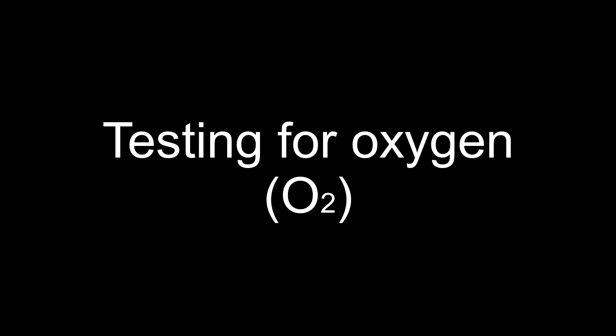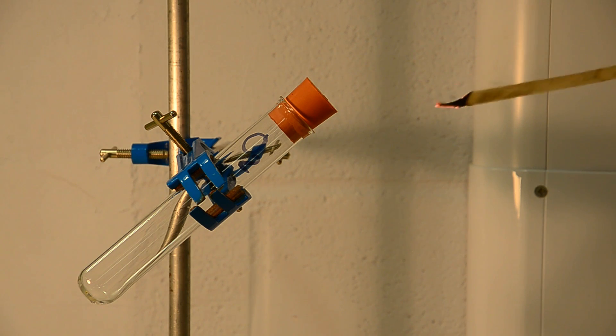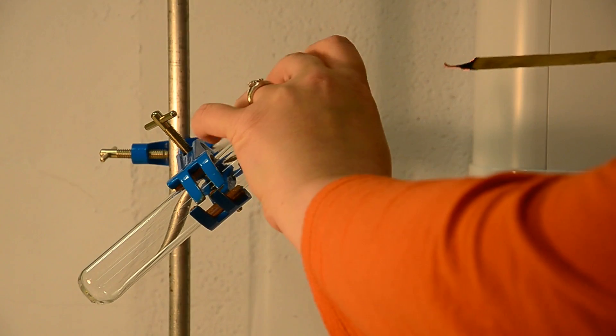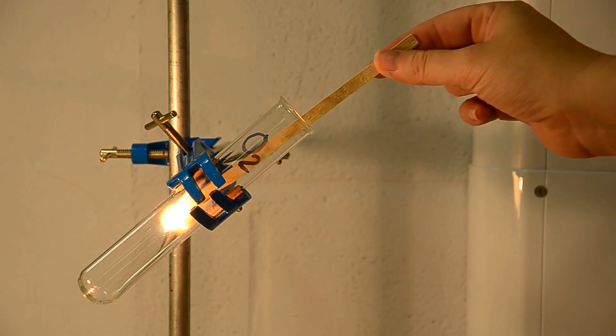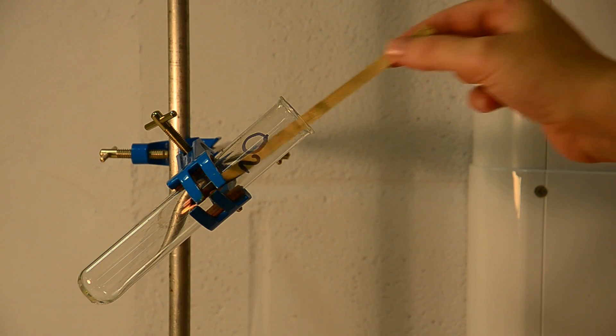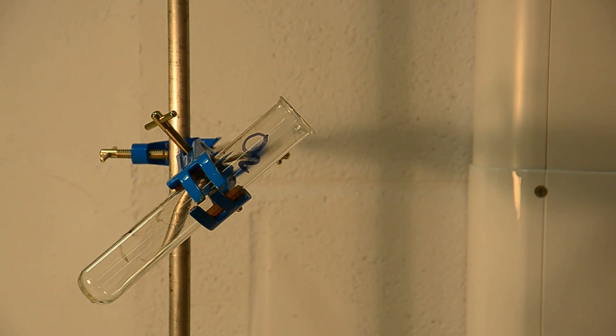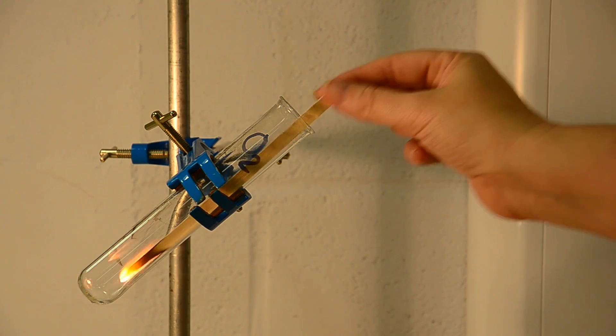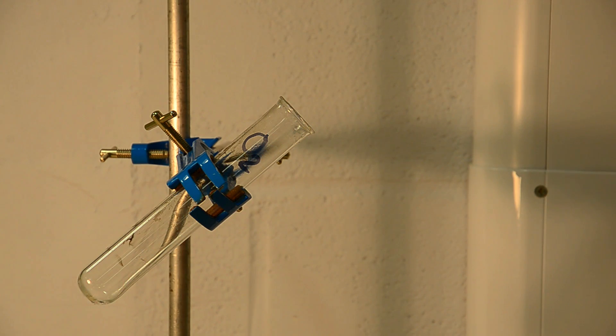The second test we'll be looking at is the one for oxygen. Here I've got a tube of oxygen gas and a wooden splint which I've blown out. As you can see, oxygen being the gas that's vital for combustion, the oxygen relights this splint. So the key points are the splint is glowing and the oxygen relights it.